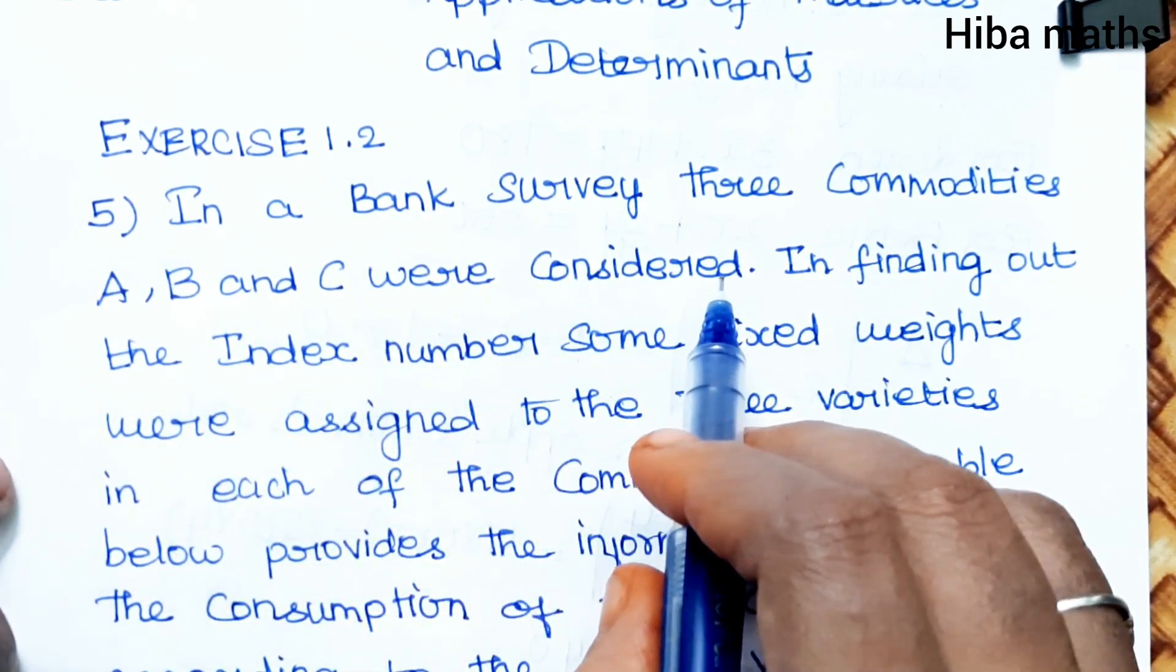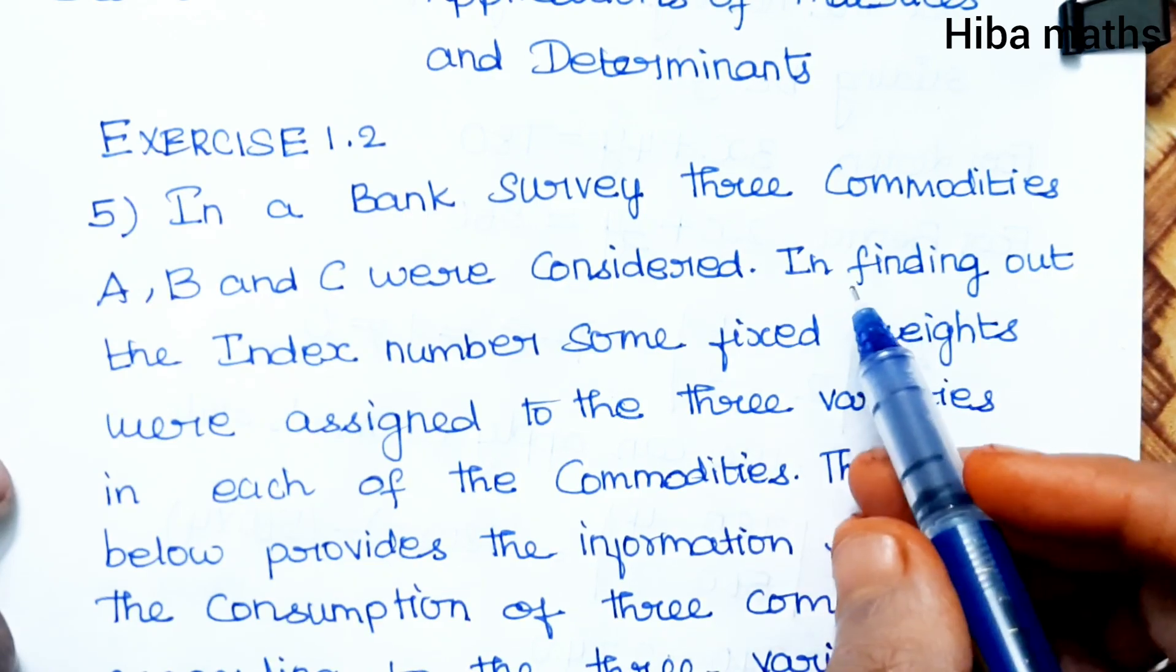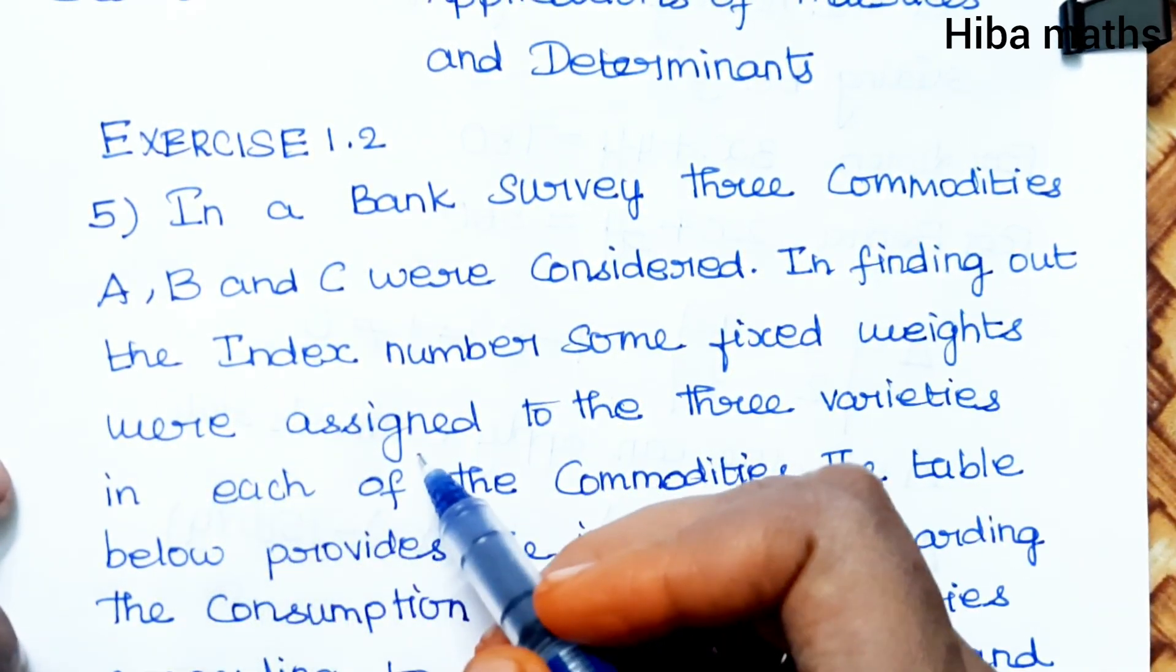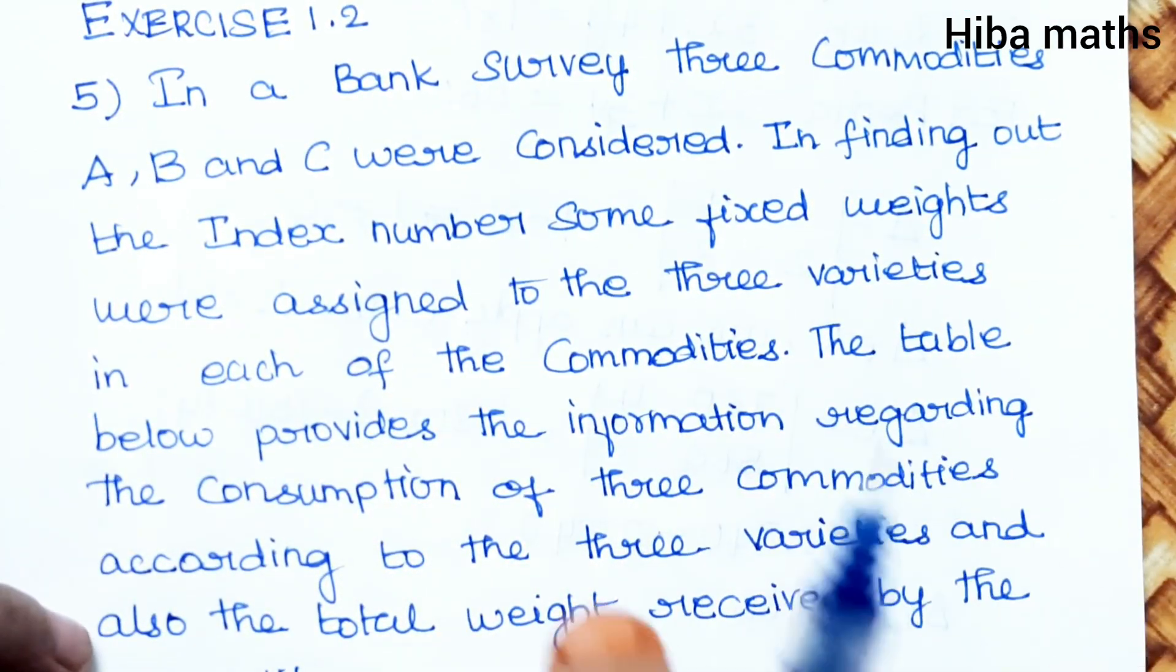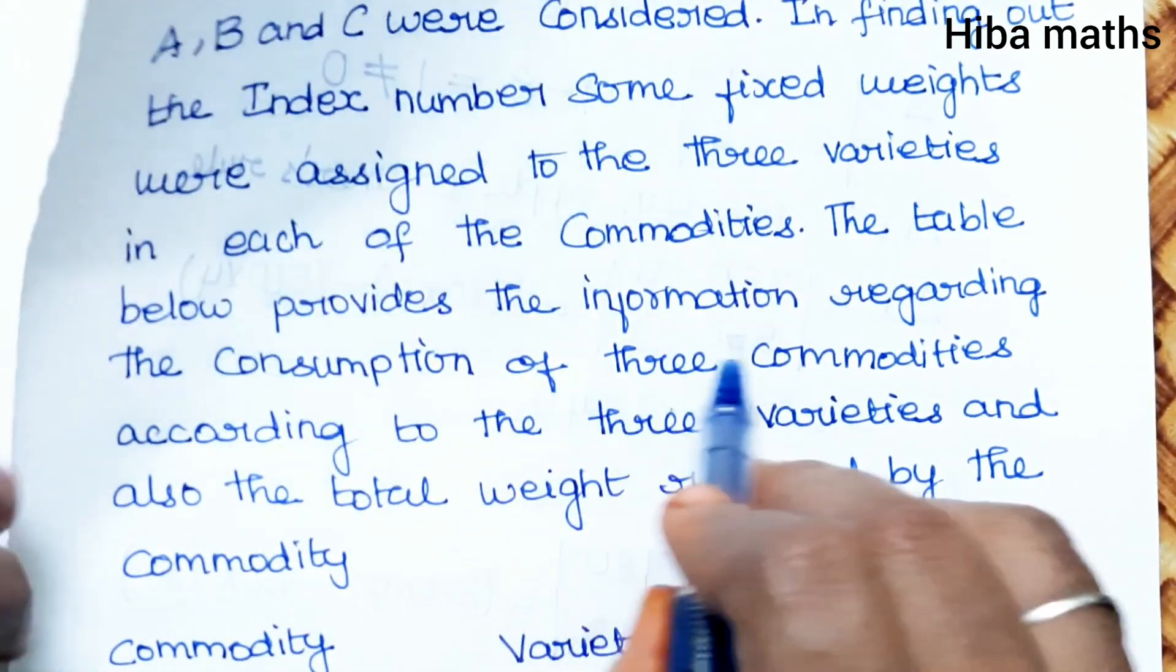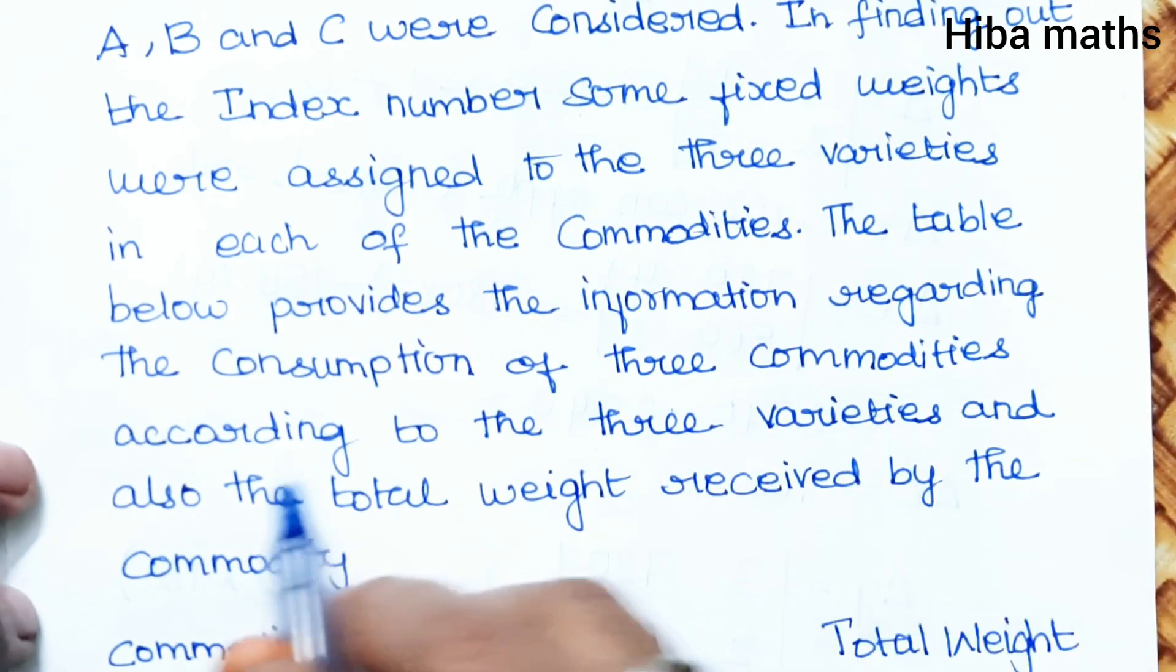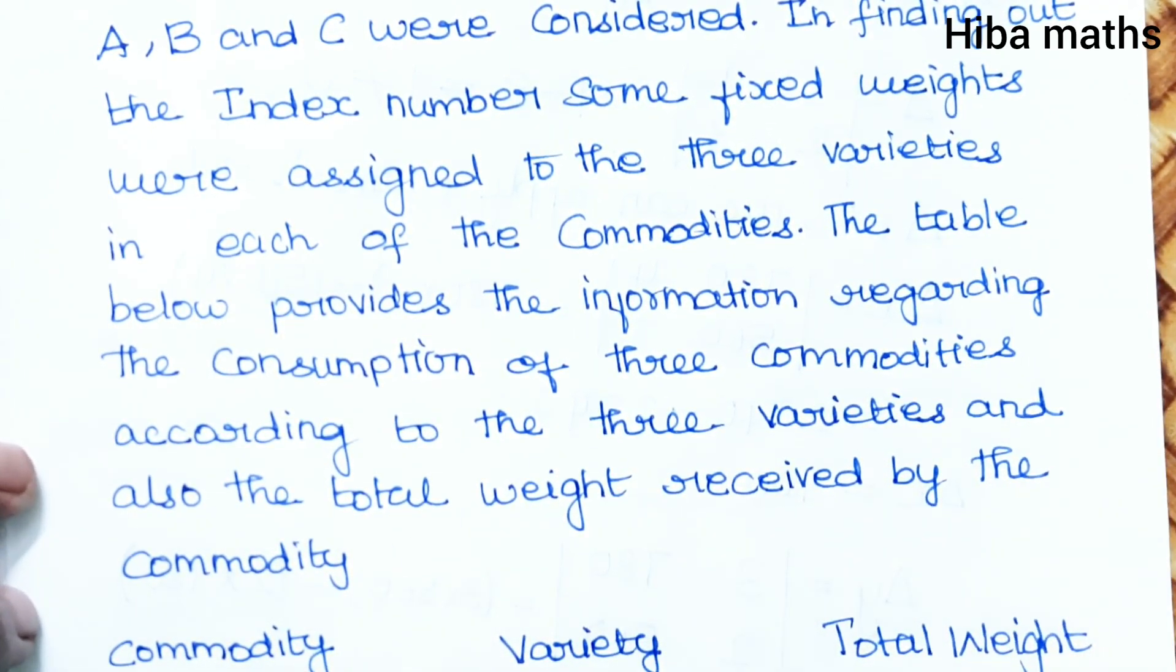In finding out the index number, some fixed weights were assigned to the three varieties in each of the commodities. So one variety is fixed. The table below provides the information regarding the consumption of three commodities.